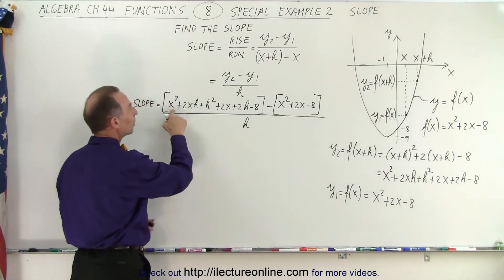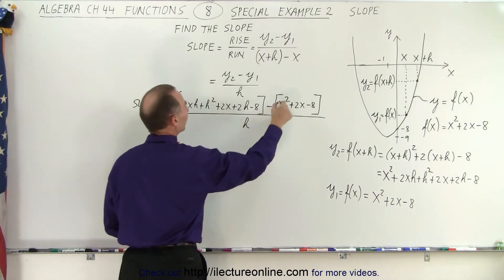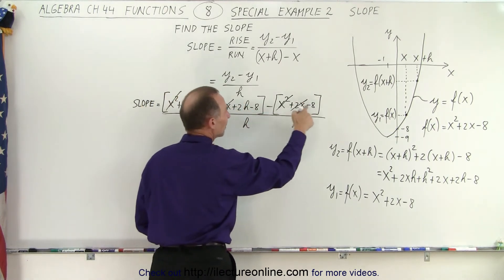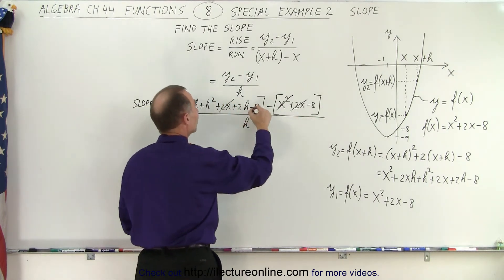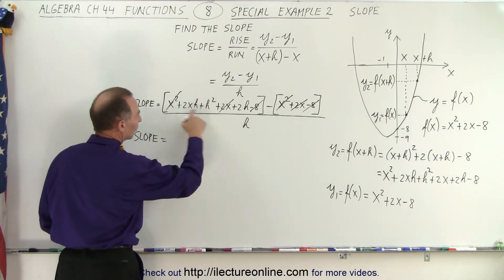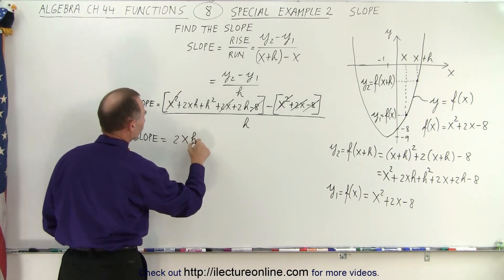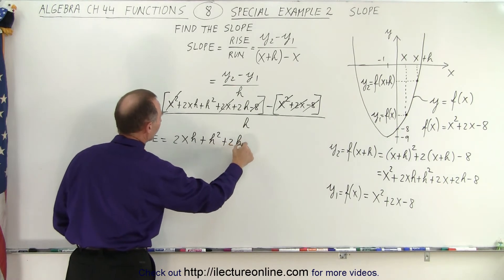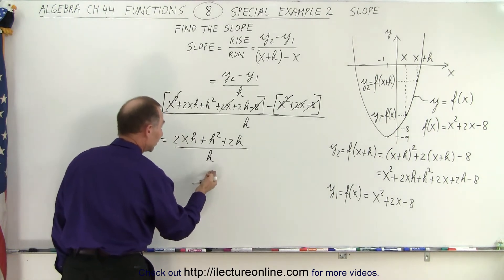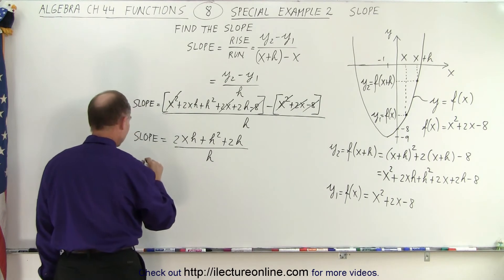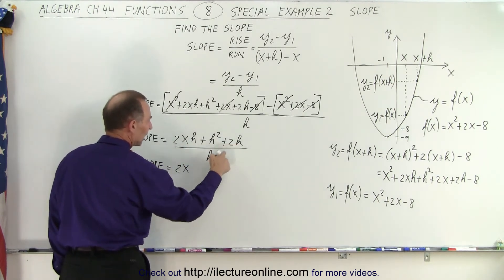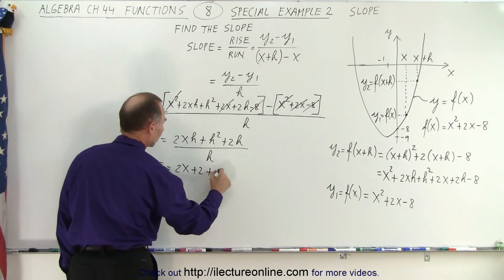Notice we have x squared minus x squared, so the x squared cancels. We have 2x minus 2x, so the 2x cancels. And we have minus 8 minus a minus 8 — a minus times a minus is plus, so the plus 8 and minus 8 cancel as well. That leaves the slope equal to 2xh plus h squared plus 2h, all divided by h. Every term in the numerator contains an h, so dividing gives us: slope equals 2x, plus 2h divided by h which is 2, plus h squared divided by h which is h.